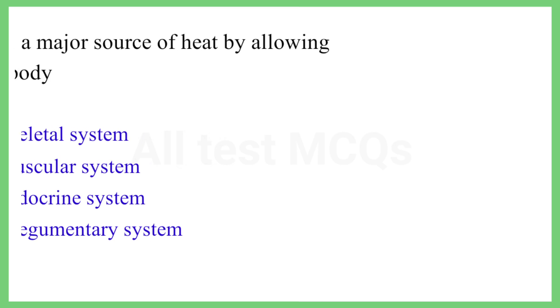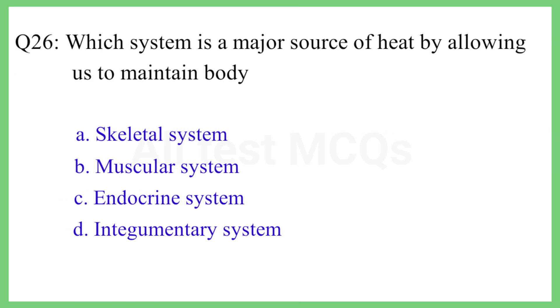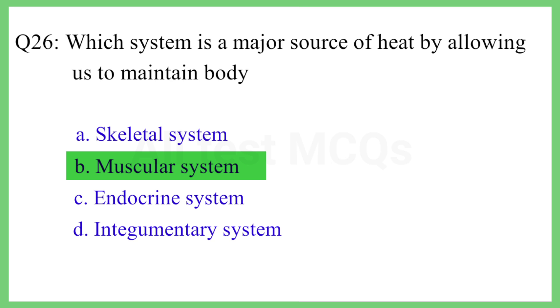Question No. 26. Which system is a major source of heat, allowing us to maintain body temperature? The correct answer is Option B: Muscular system.